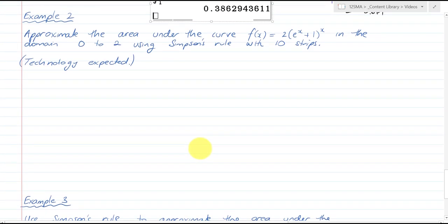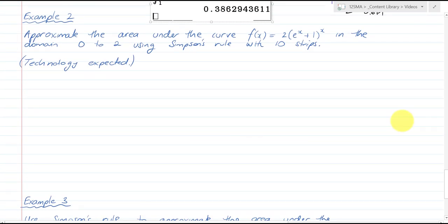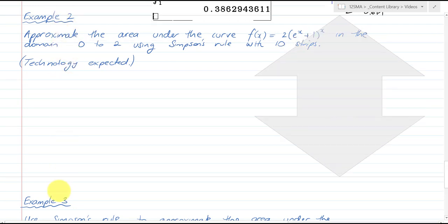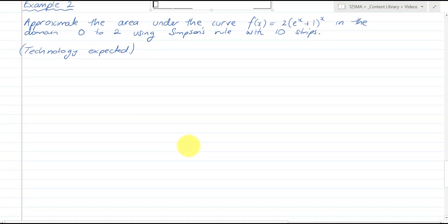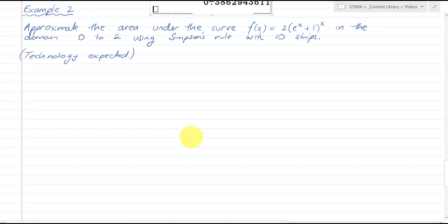We have got an example 2 and 3, so I'll run through these as well. Approximate the area under the curve f(x) equals 2(e^x + 1)^x in the domain 0 to 2 using Simpson's rule with 10 strips. This is a technology expected question, and so I'll run through this one quickly, but again, it's going to be using the table function, and being clever with the table function because I'll be writing things down as I go.